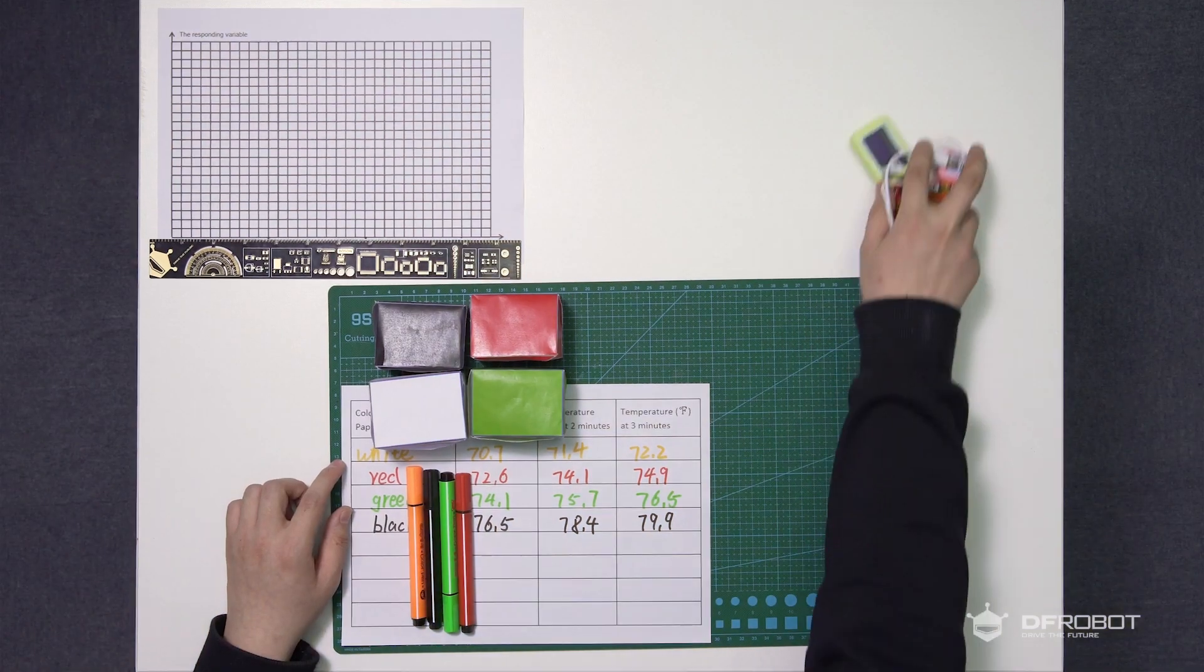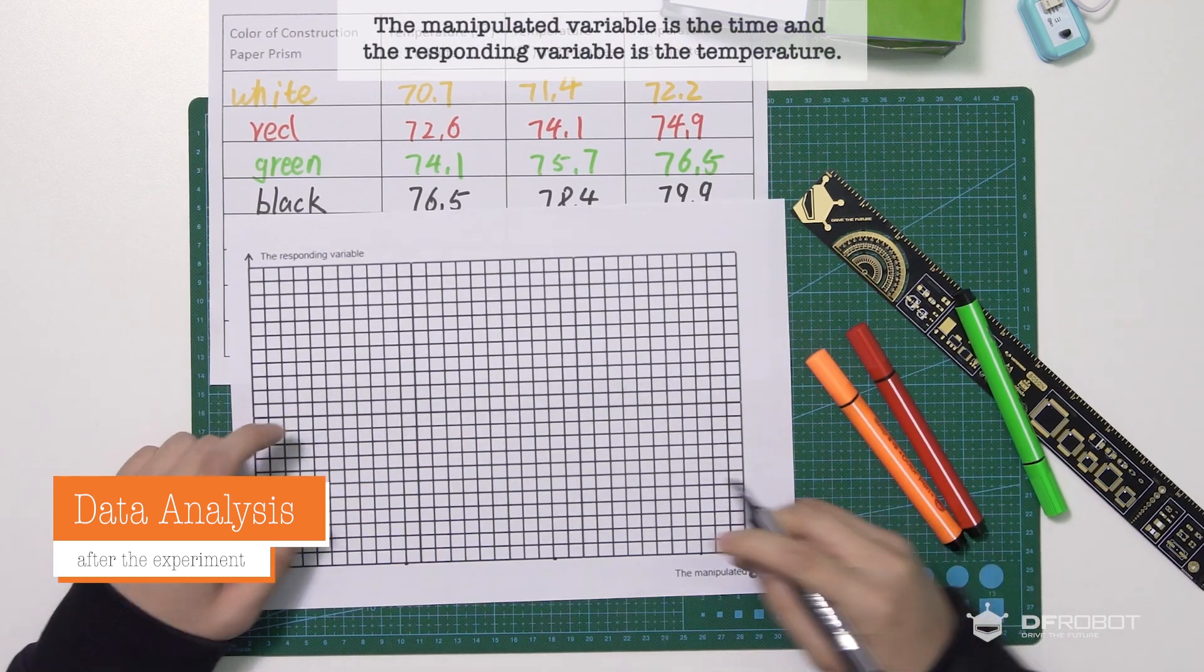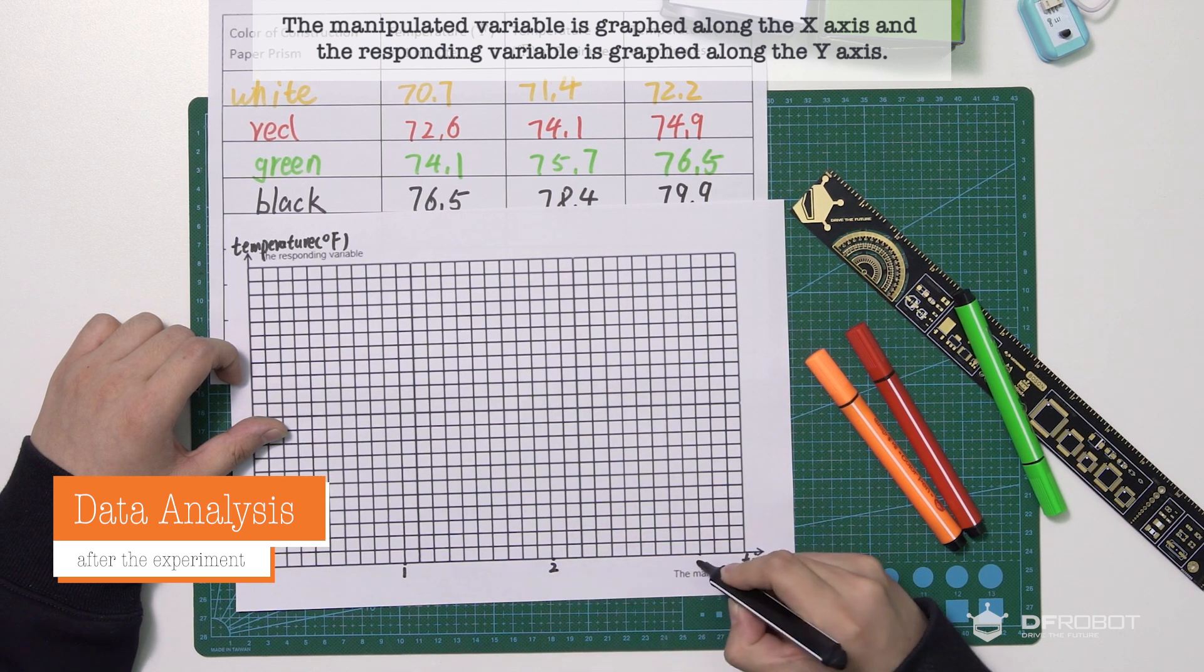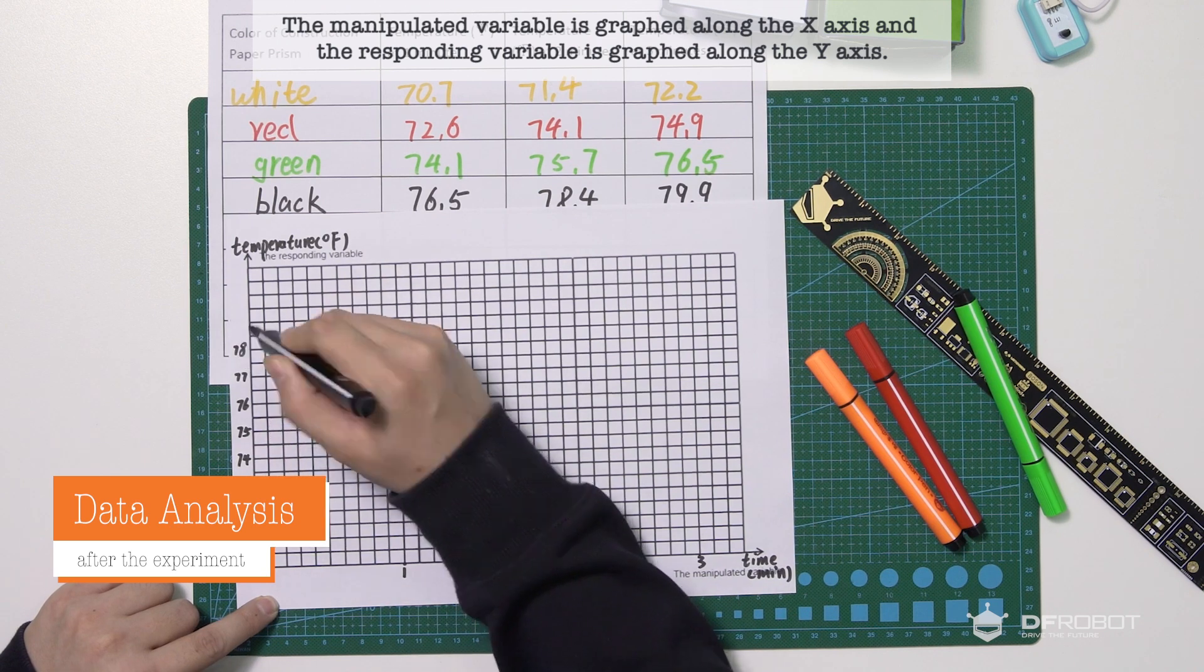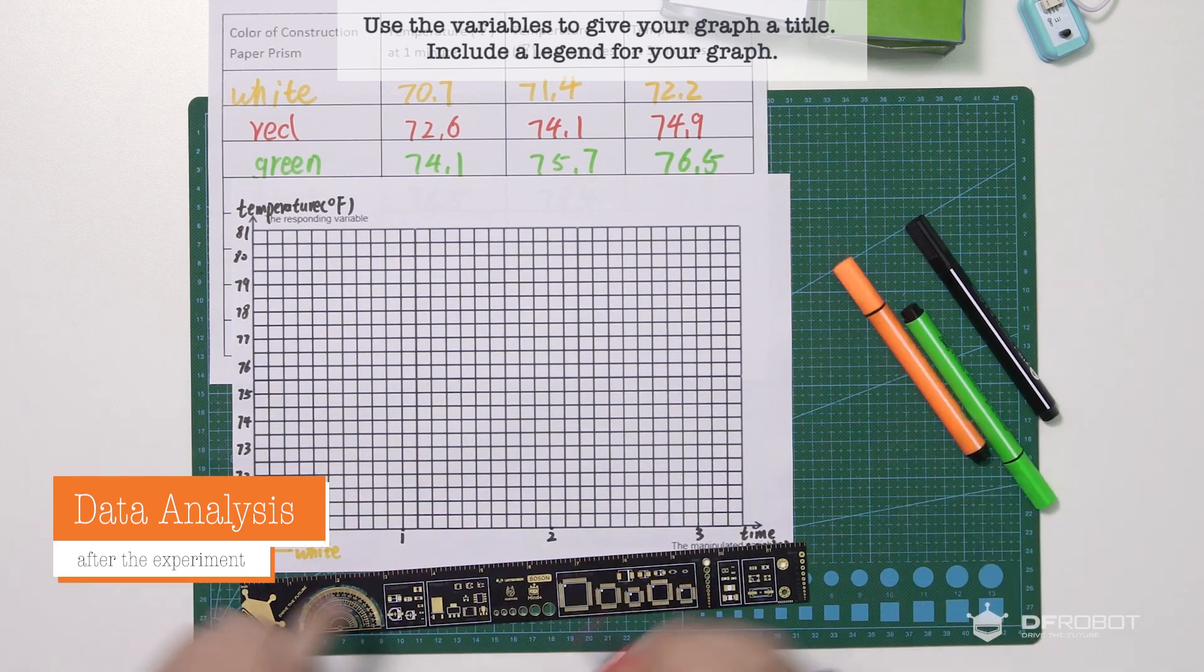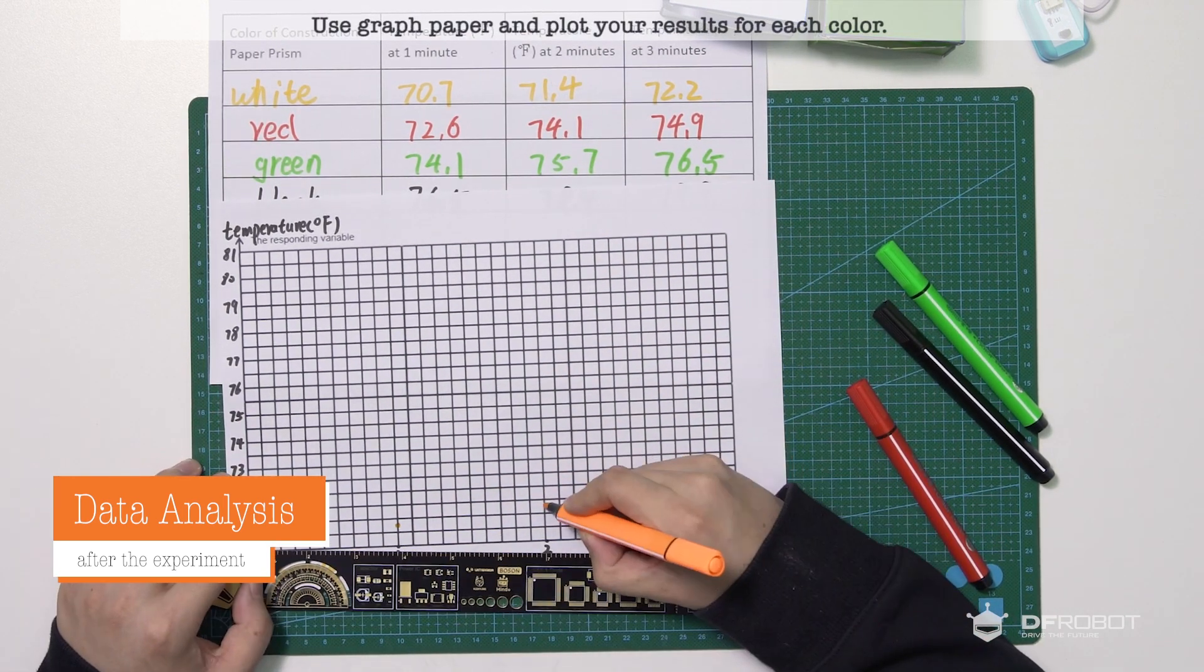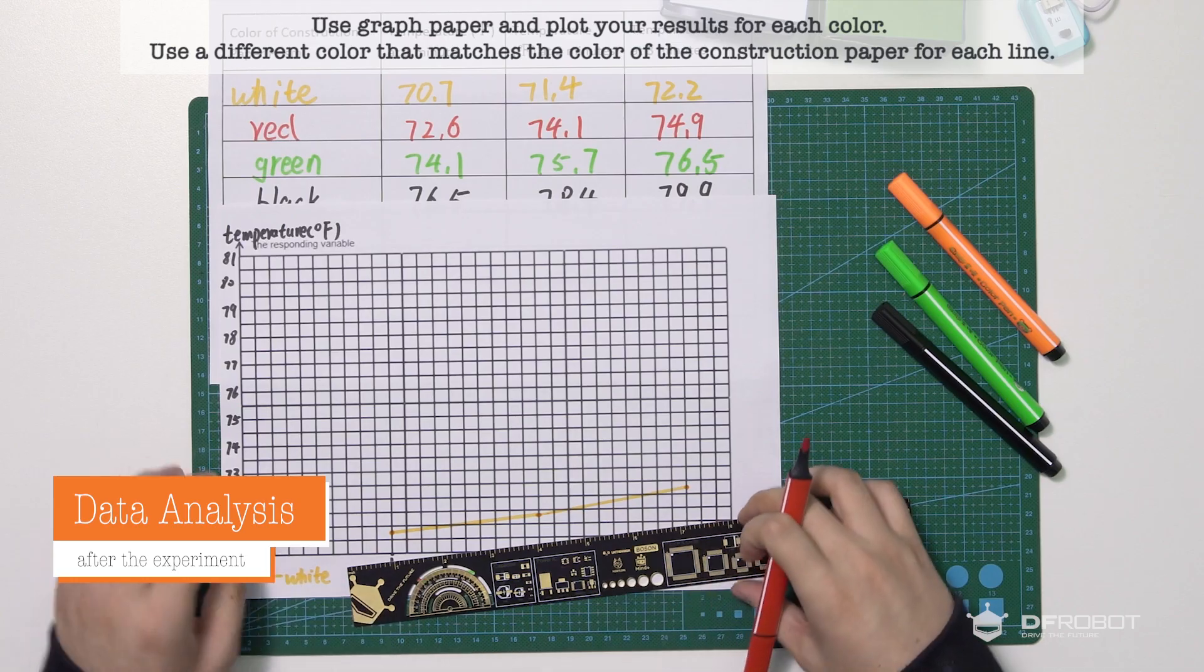After recording the data, we can create a multicolored line graph. The manipulated variable is the time and the responding variable is the temperature. The manipulated variable is graphed along the x-axis and the responding variable is graphed along the y-axis. Use the variables to give your graph a title. Include a legend for your graph. Use graph paper and plot your results for each color.